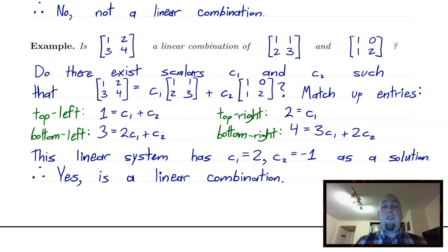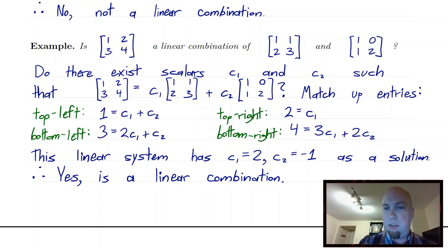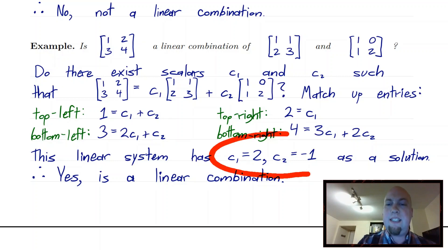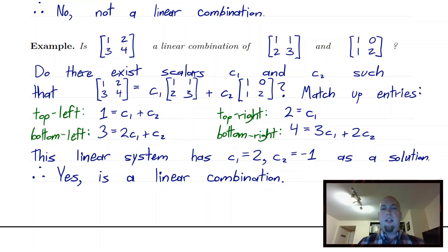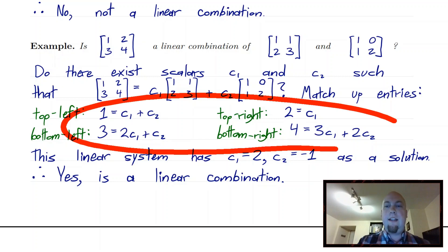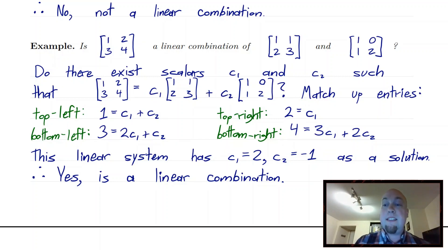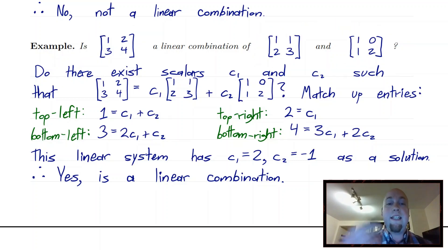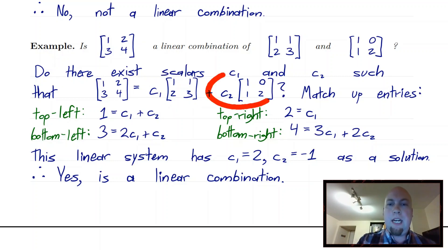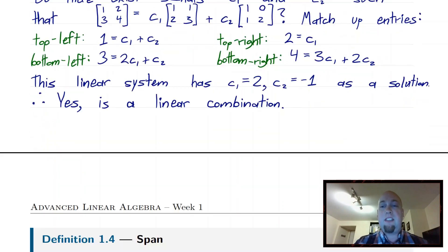We go through Gaussian elimination from introductory linear algebra to solve this linear system. It turns out there is a solution. From the top-right entry, c1 must equal 2, and plugging that into the other equations gives c2 equals minus 1. Checking all four equations are satisfied confirms yes — this matrix is a linear combination of the other two. Specifically, it equals 2 times the first matrix minus 1 times the second.